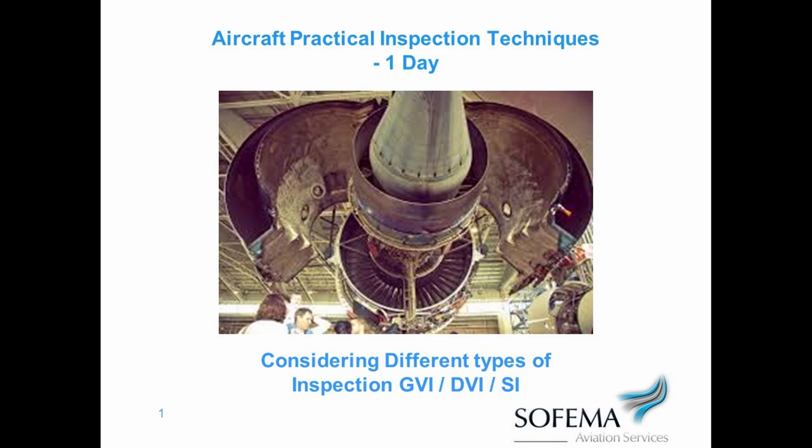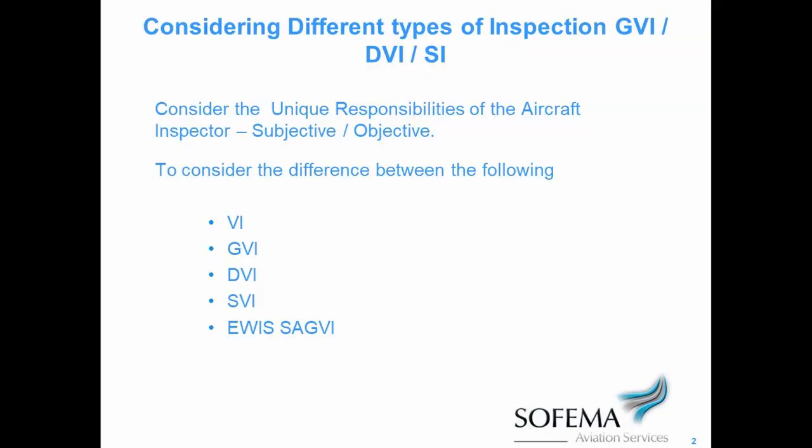Here we're going to talk about the different types of inspection involved in aircraft inspection. We're going to talk about general visual inspection, detailed visual inspection, and special inspection. We're also going to understand what we mean by a special general visual inspection and where that came about. We have a list of inspections: visual inspection, general visual inspection, detailed visual inspection, special visual inspection, and the eWIS standalone general visual inspection.